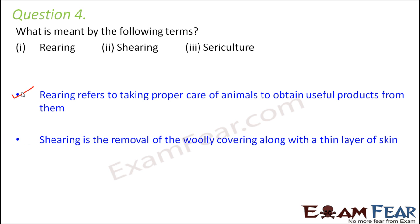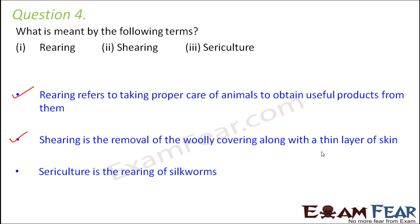Shearing is the process of removing the woolly covering along with a thin layer of skin from wool animals such as sheep or goat. When we want to obtain wool, the first step is always shearing — removing the layer of wool from their body. This process doesn't hurt them because the layer of skin being removed is dead skin.